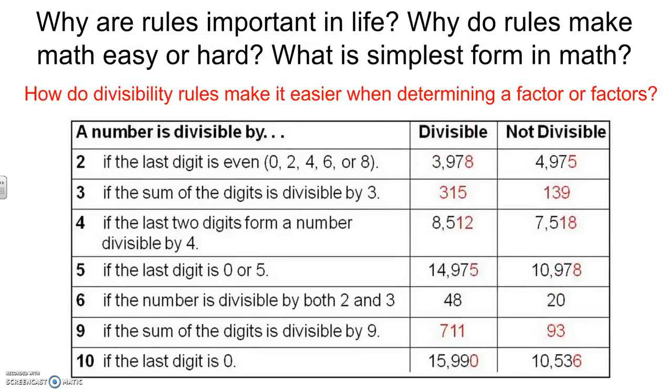Here's an example. We learn divisibility rules. For example, if that number ends in an even digit, well then it's divisible by two. If the sum of the digits is divisible by three, then it's divisible by three. So here we have three plus one plus five is nine. Well that's divisible by three, but one plus three plus nine is thirteen, not divisible by three, and so on.